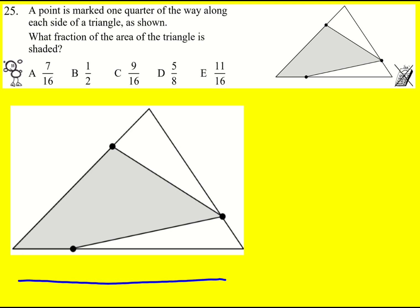Now we don't know any dimensions, but remember ultimately we just need the fraction. So I'm going to call this base B. We're told, and this is crucial, a point is marked one quarter of the way along, which means that this distance here is going to be three quarters B.